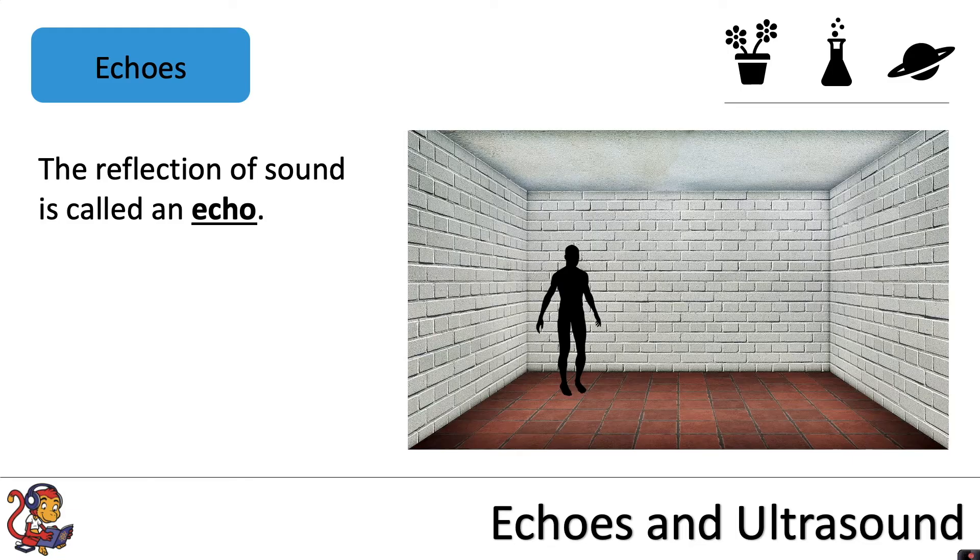The reflection of sound is called an echo. For example, if this person speaks, the sound wave will travel to the wall in front. Some of the sound wave will be absorbed by the wall and some will be reflected back, and the person will be able to hear that as an echo.